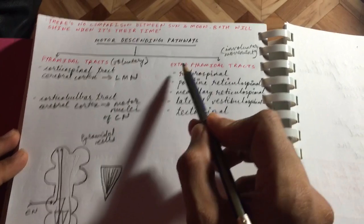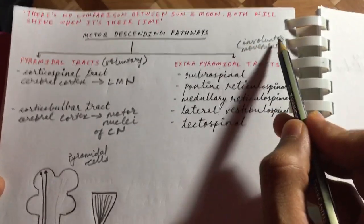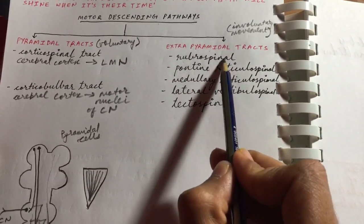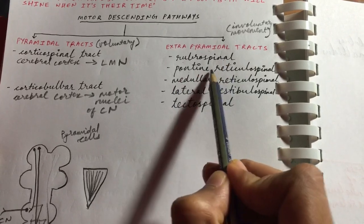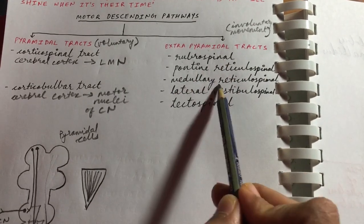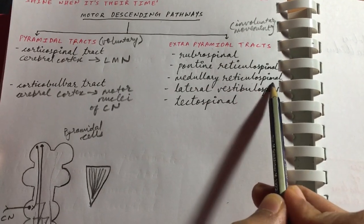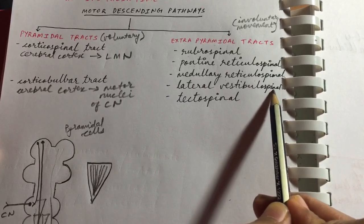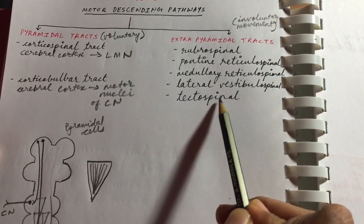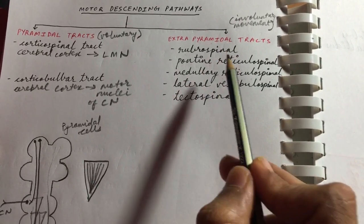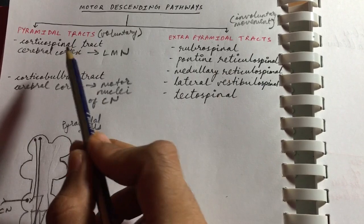Extra-pyramidal tracts control involuntary movement. The main tracts are the rubrospinal tract, pontine reticulospinal tract, medullary reticulospinal tract, lateral vestibulospinal tract, and tectospinal tract. We will not go into detail on these tracts right now, as the main aim of this video is to clarify the difference between both tracts.